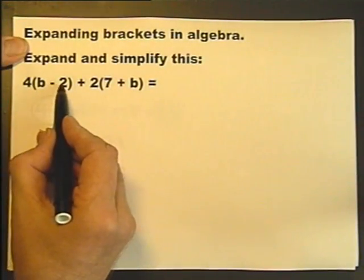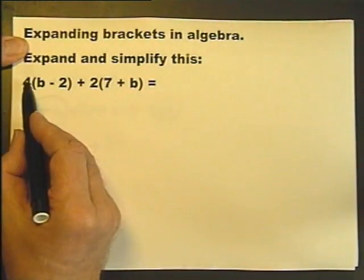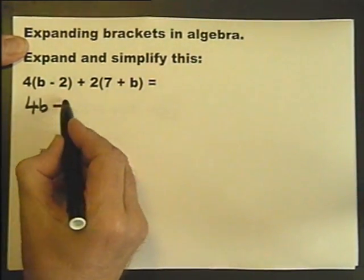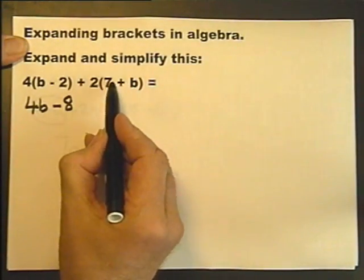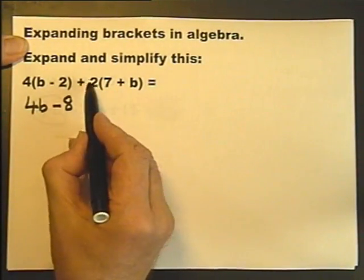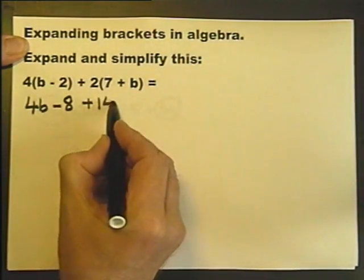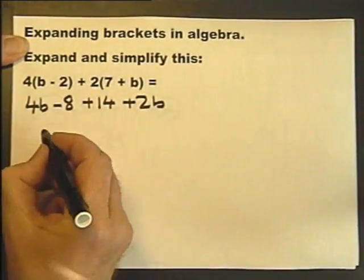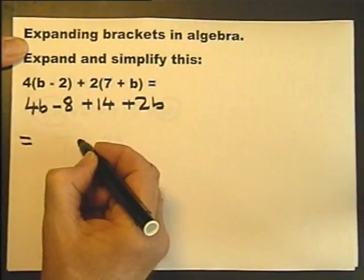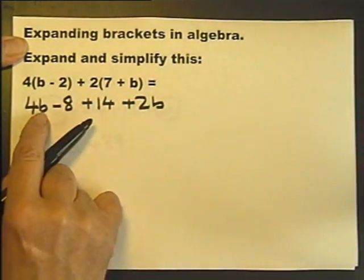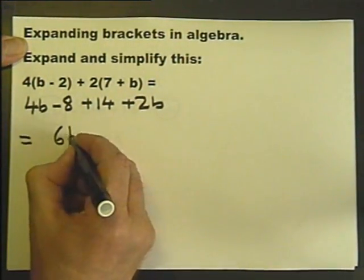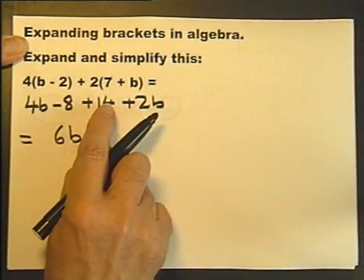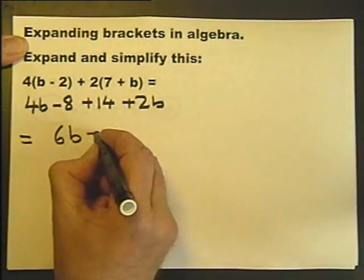Multiply both of these by that 4. 4Bs are 4B. 4 minus 2s are minus 8. Now multiply both of these by that plus 2. Plus 2 times 7 is plus 14. Plus 2 times plus B is plus 2B. Collecting together like terms and constants, you've got 4B there and 2B there, a total of 6B. Minus 8 plus 14 is the same as plus 14 minus 8, which will give you plus 6.